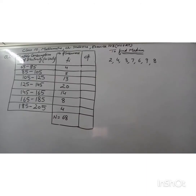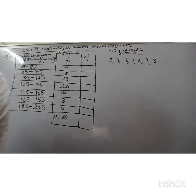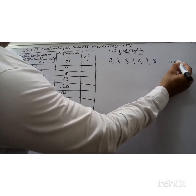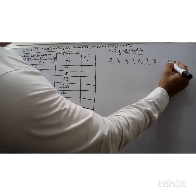Today I will be discussing median. Median is the measure of central tendency which gives the value of the middlemost observation. So it means the middlemost observation is the median. Let's take one example — there are seven students and their marks are given.